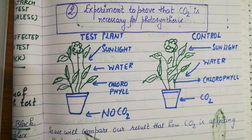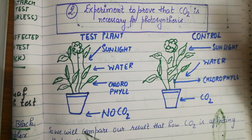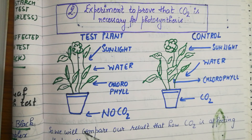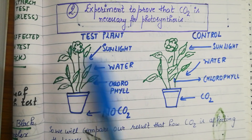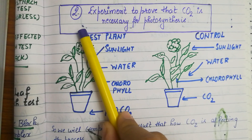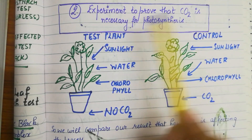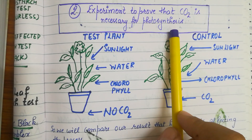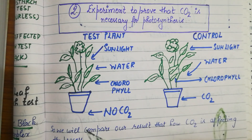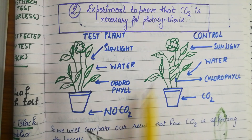This is our second topic, the second activity. As I told you, we have to discuss three activities after autotrophic nutrition, which are mentioned in your NCERT also. This second activity is to prove that CO2 is necessary for photosynthesis. So how are you going to write or perform this activity?